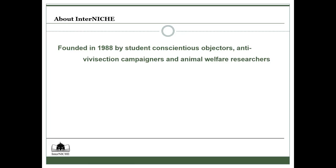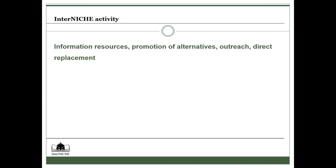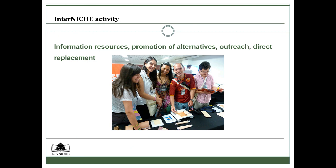InterNICHE was founded back in 1988 by students who conscientiously objected to the harmful animal use in their classes, and anti-vivisection campaigners and animal welfare researchers. We're a small, not-for-profit organization with a global network, and we have national contacts and partners in many different countries. We're largely volunteer-based, and we produce a lot of information resources. We promote alternatives, do outreach tours across the world, and try to achieve direct replacement of the harmful animal use.